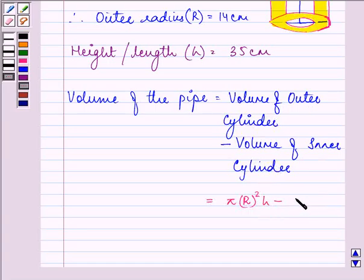On taking π H common, we are left in the bracket with bigger R squared minus smaller r squared.